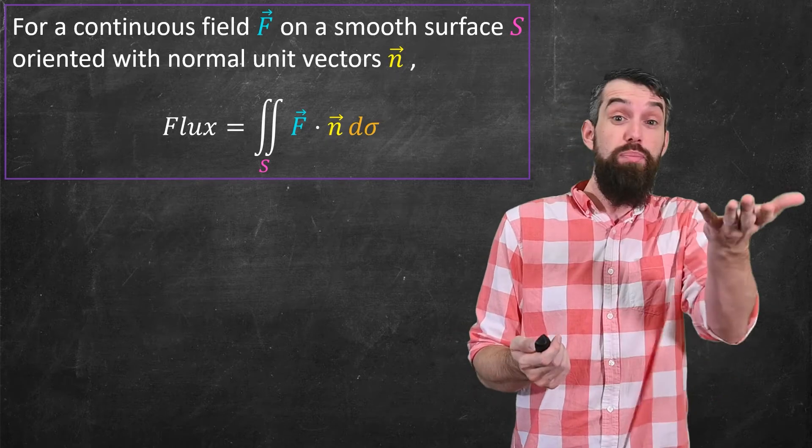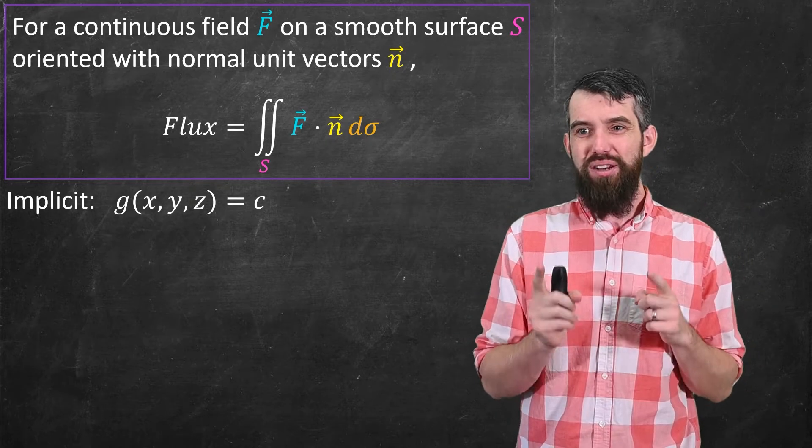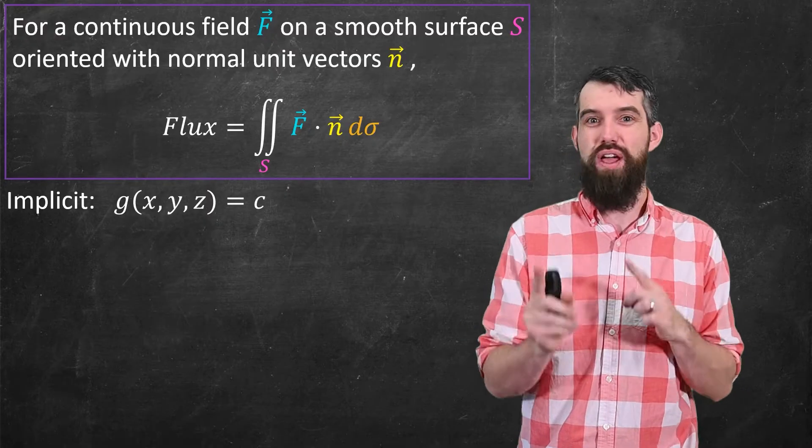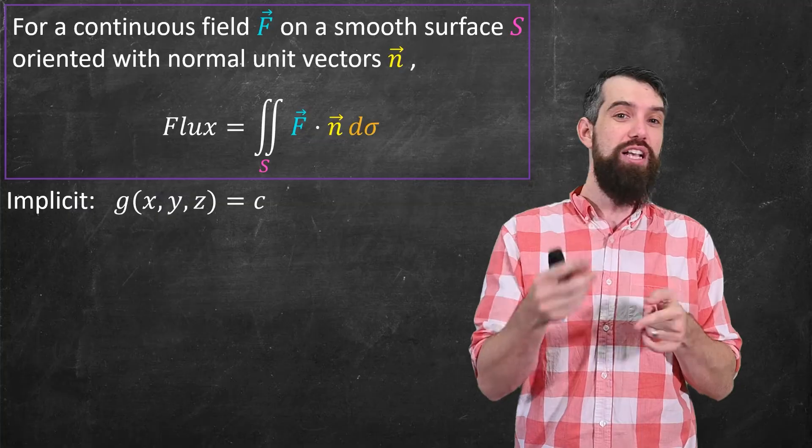Similarly, I could work with implicit surfaces. I've often called these big f before, big f of x, y, z, but I'm going to change my terminology sort of annoyingly and call it little g of x, y, and z.